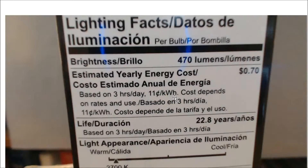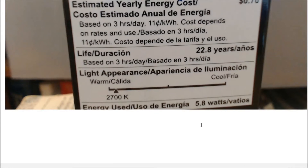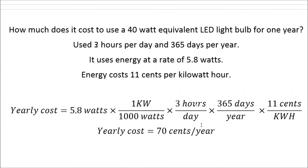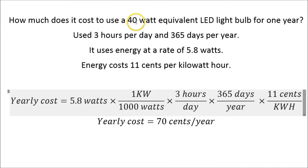Remember, a kilowatt is a rate of energy use, and a kilowatt hour is energy — it's using a kilowatt for one hour. By the way, the life of the bulb is supposed to be 22.8 years. So here's the problem: how much does it cost to use a 40 watt equivalent LED bulb for one year? Three hours per day, 365 days per year. Its energy rate is 5.8 watts — 5.8 joules per second — and it costs 11 cents per kilowatt hour.